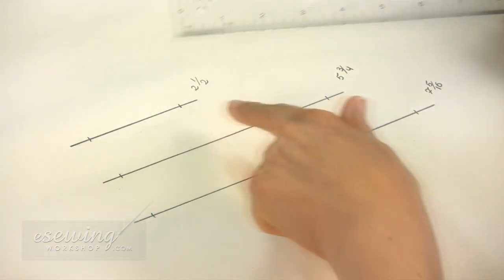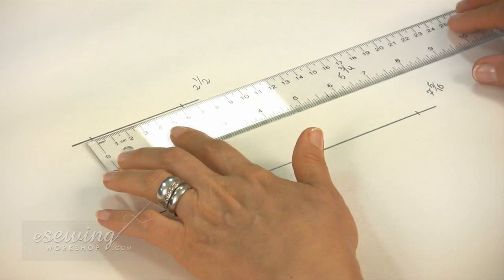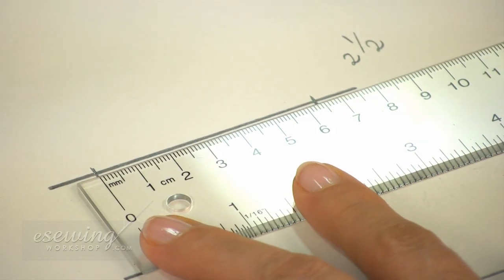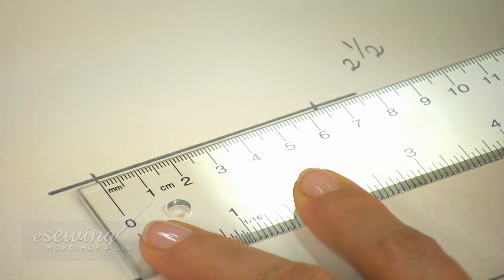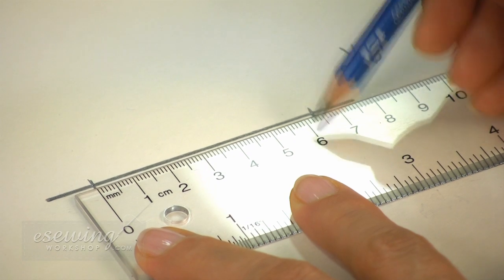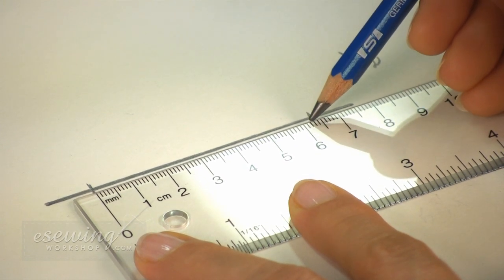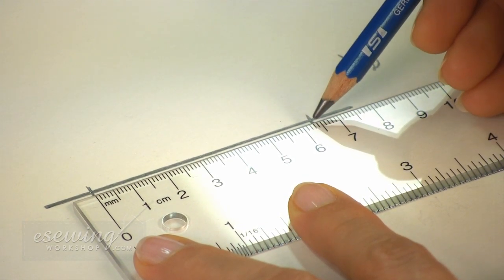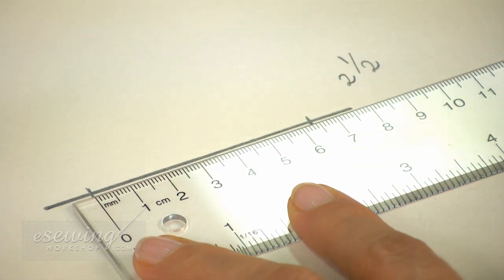Now we will measure the lines in centimeters. This line is 6 centimeters. This line is 6 centimeters and we count the millimeters. 1, 2, 3 and 4. 6.4 centimeters.